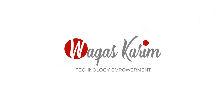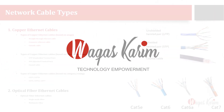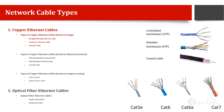Network cables have two main types. The first type is copper ethernet cables and the second type is optical fiber based ethernet cables.